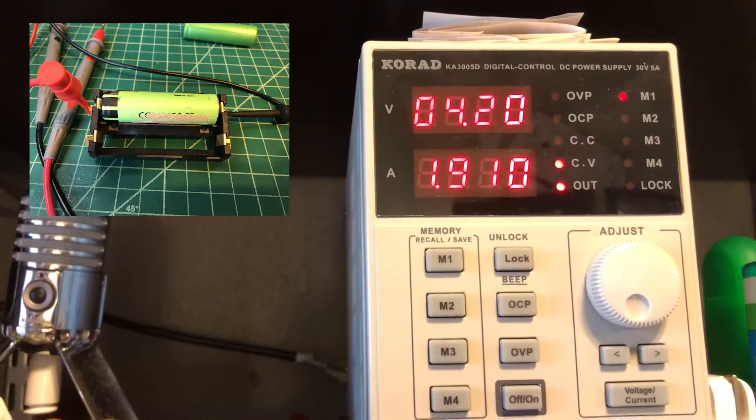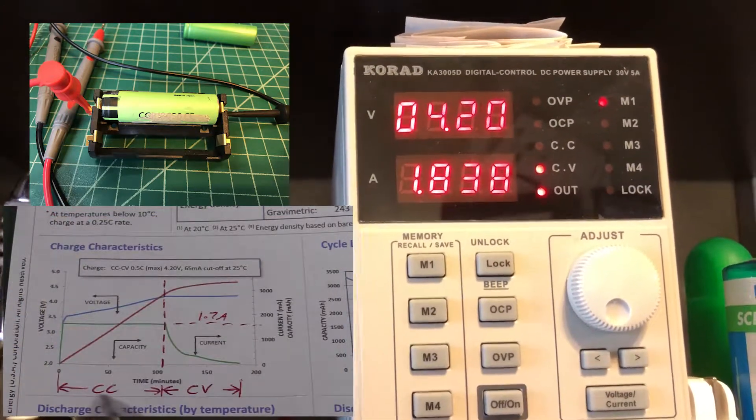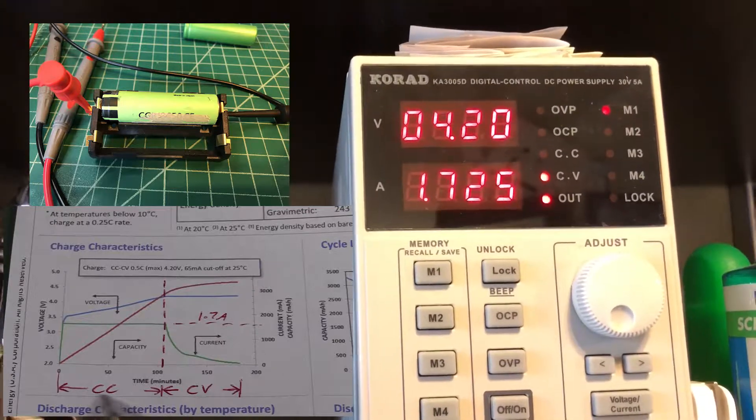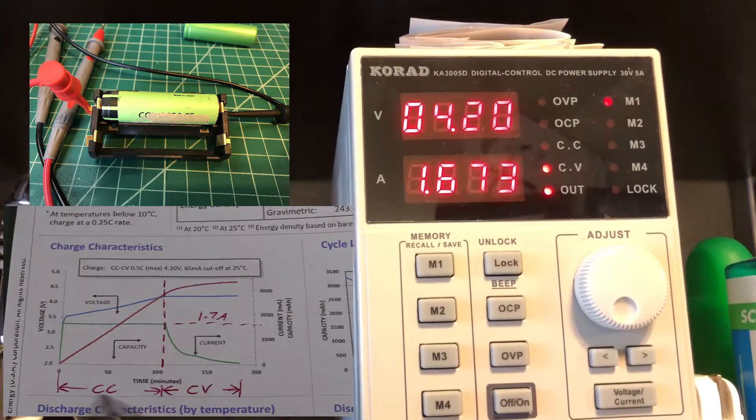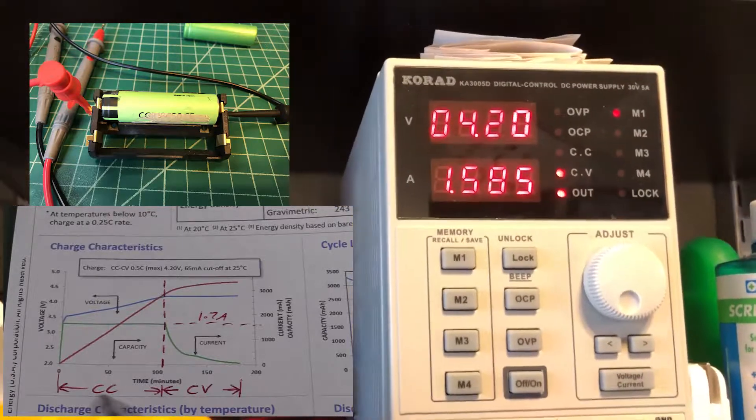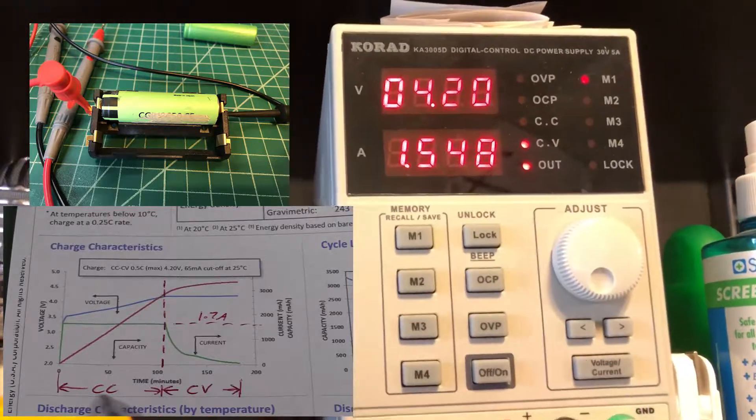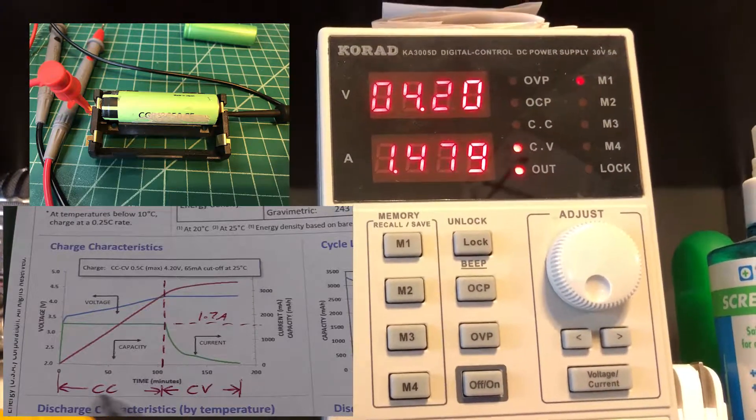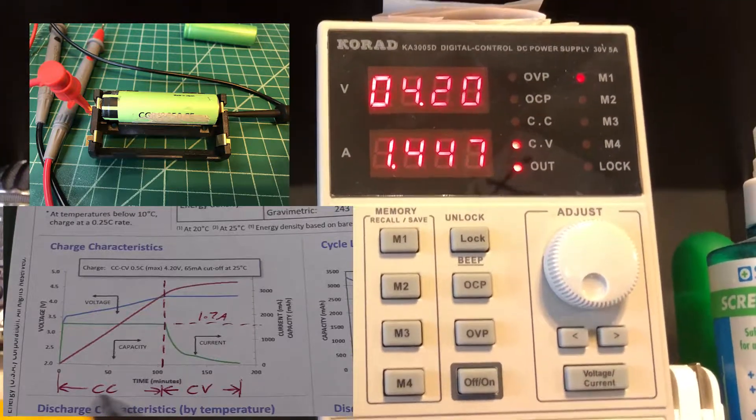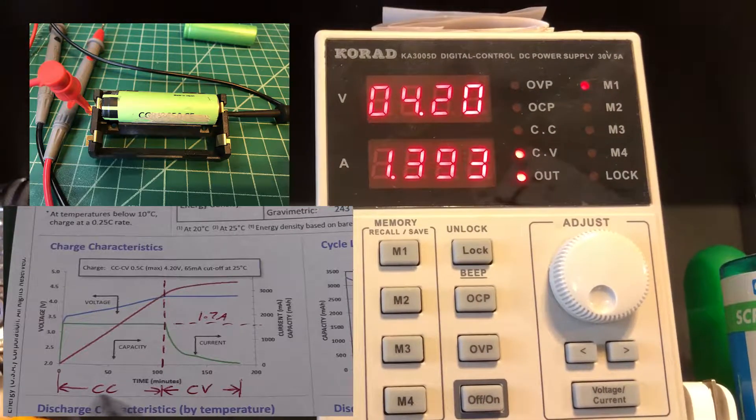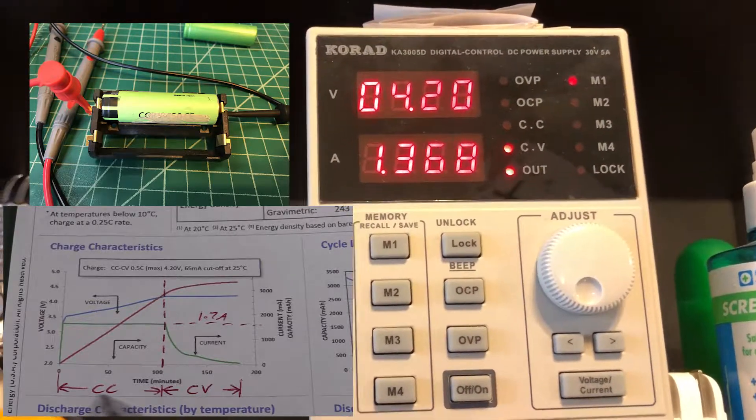This point is represented by this graph that I snagged out of Dave Jones's video for using power supplies to charge 18650s. The point that just passed is represented on that graph with the vertical dotted red line. From this point forward in the charging process, the green line represents the current that continues to drop along the way.